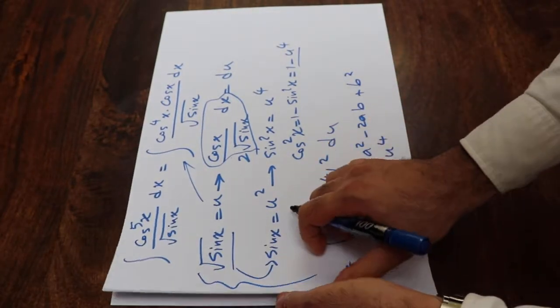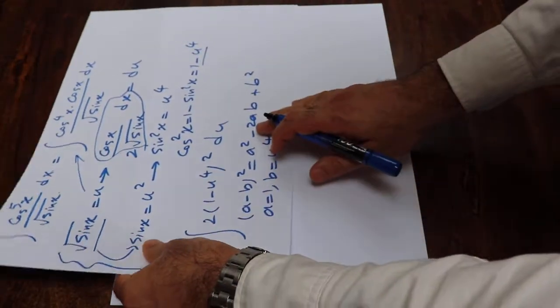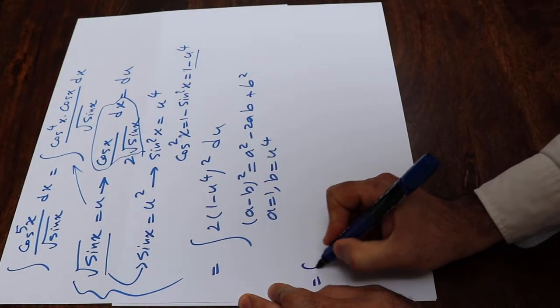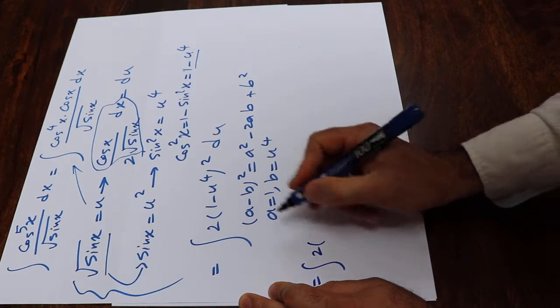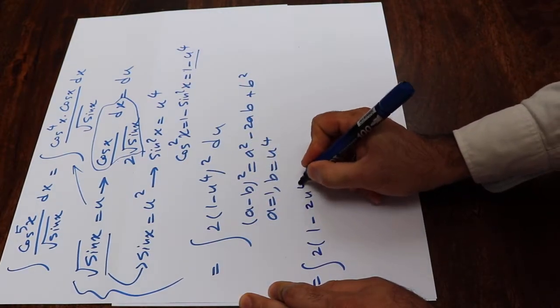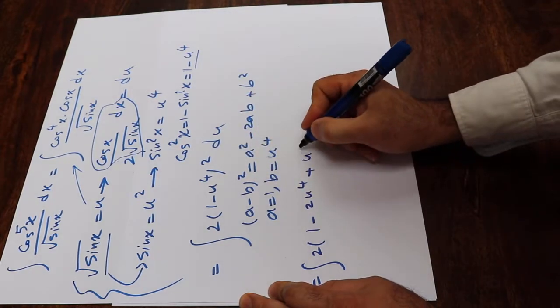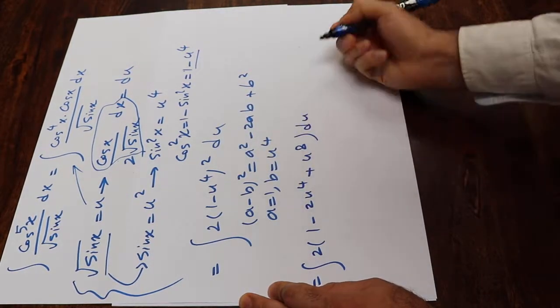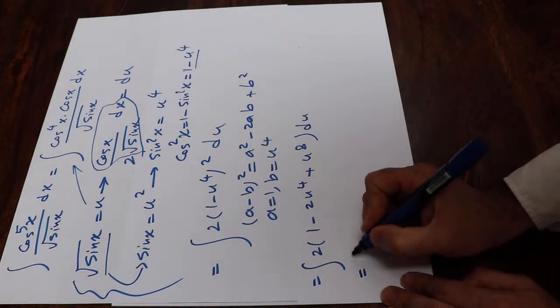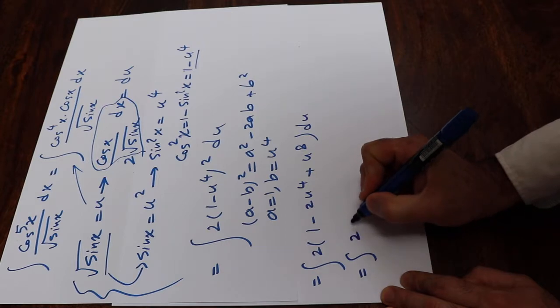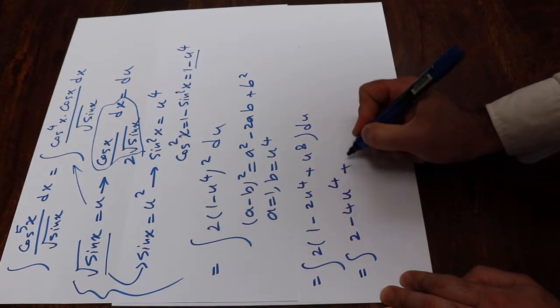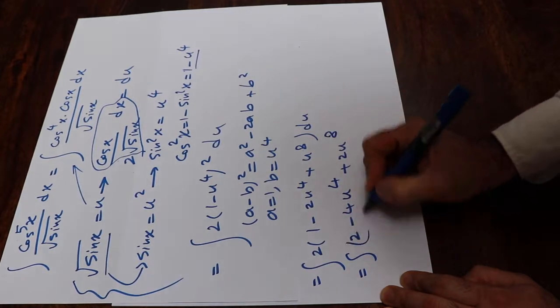you can basically conclude here that this integral will be equal to the integral of 2 times 1 minus 2ab, which will be 2u to the 4th plus b squared, which will be u to the 8th du. And this integral now will be equal to the integral of 2 minus 4u to the 4th plus 2u to the 8th du.